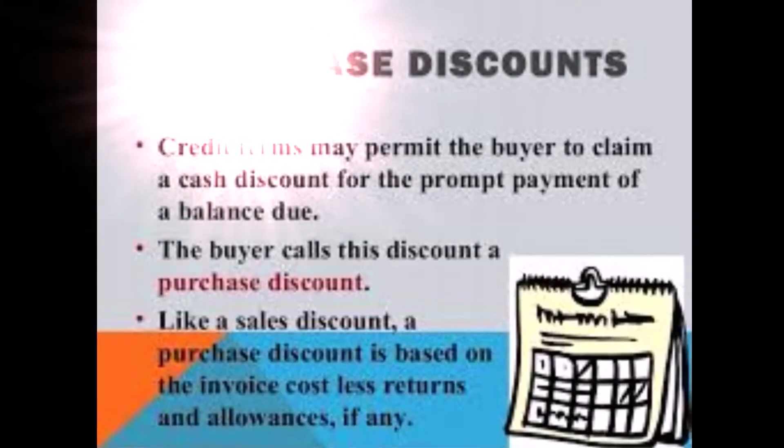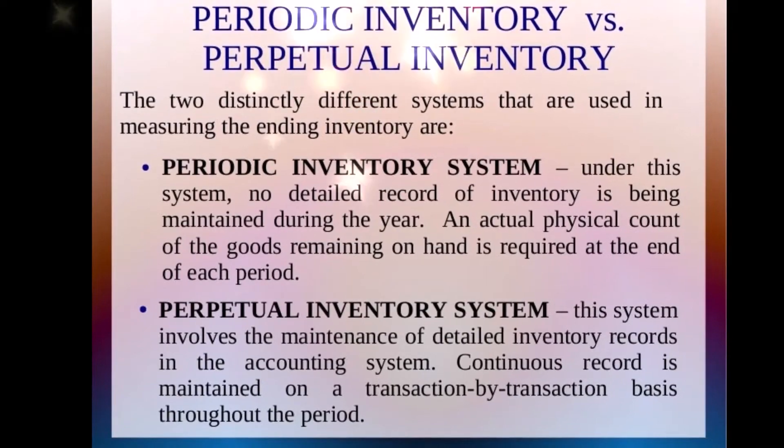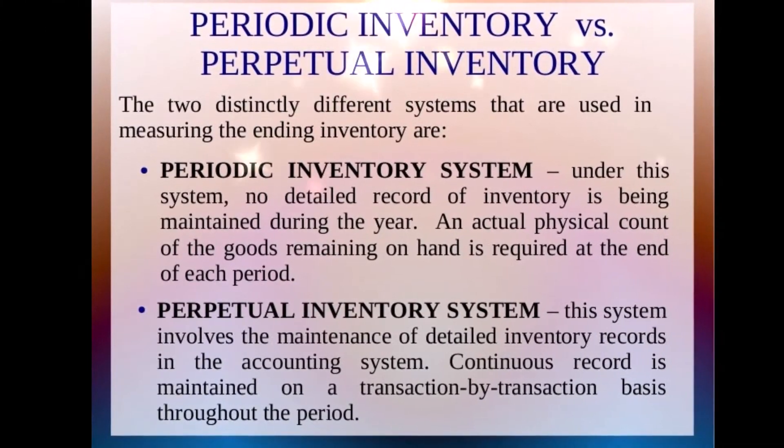Purchase Discounts: credit terms may permit the buyer to claim a cash discount for the prompt payment of a balance due. A purchase discount is based on the invoice cost less returns and allowances, if any. For example, 2/10 net 30: 2 means 2% discount, 10 means within 10 days, net is the net value, and 30 is the due date.